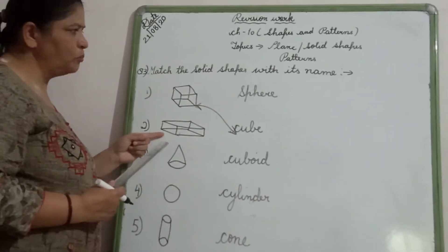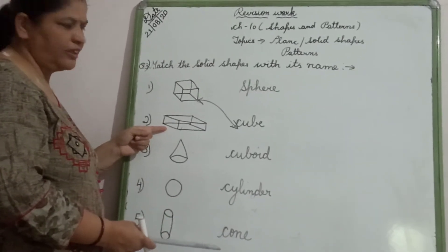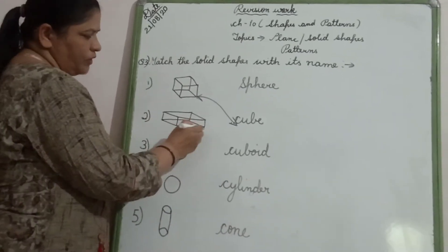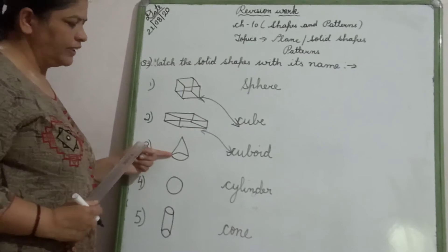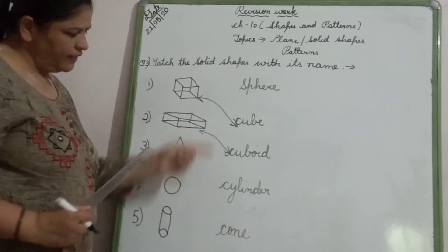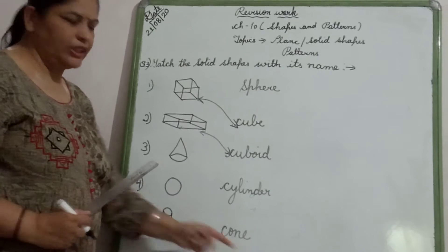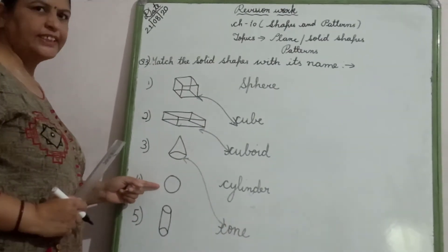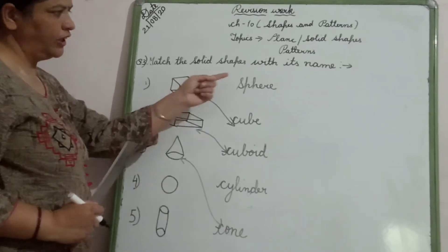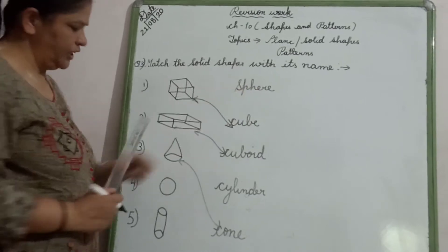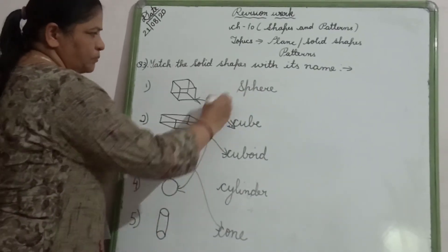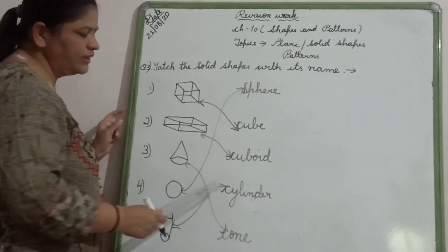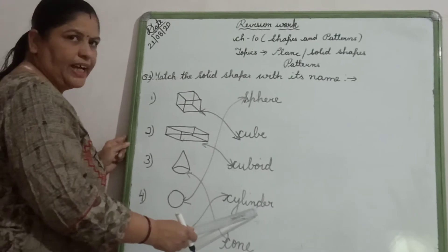Now the second is cuboid — C-U-B-O-I-D. So we will match with the spelling of cuboid. The third one is cone — C-O-N-E. So we will match with the spelling of cone. Now this is sphere — S-P-H-E-R-E, on the top. So we will match with the spelling of sphere. And the last one is cylinder — C-Y-L-I-N-D-E-R. That is matched with the spelling of cylinder.